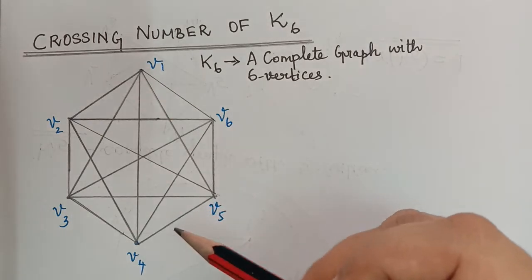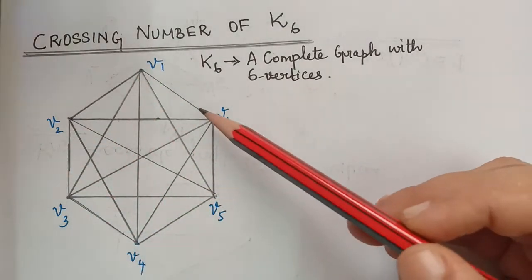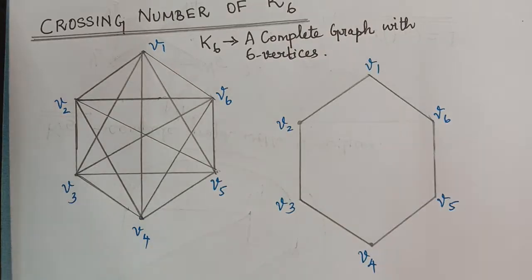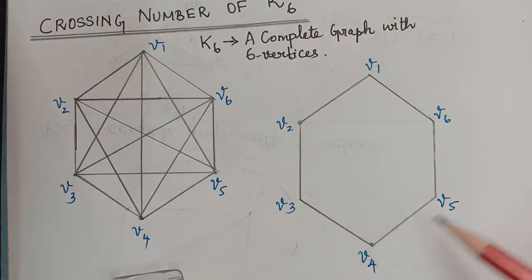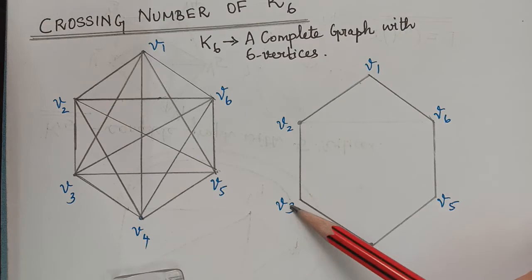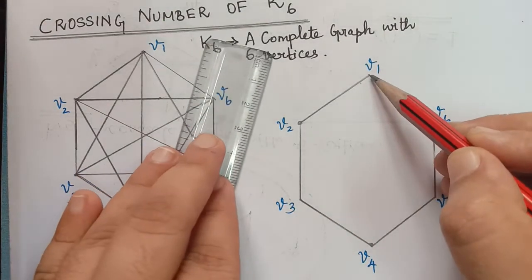First, what we have to do is let us draw the outer circle first. So first we have drawn the outer cycle V1, V2, V3, V4, V5, V6, and then we know that it is a complete graph.